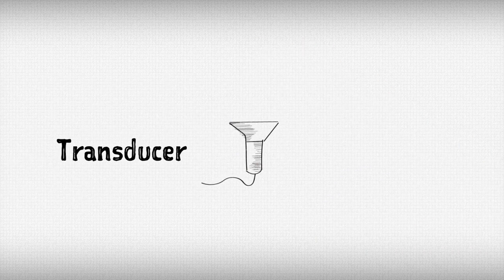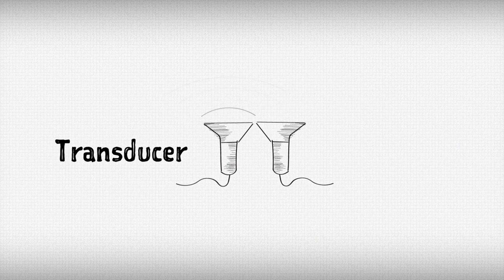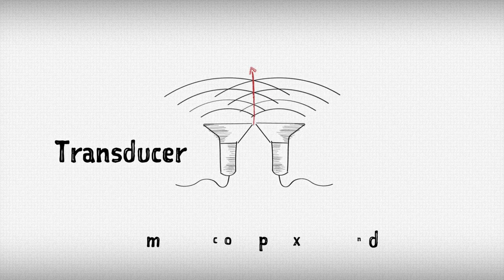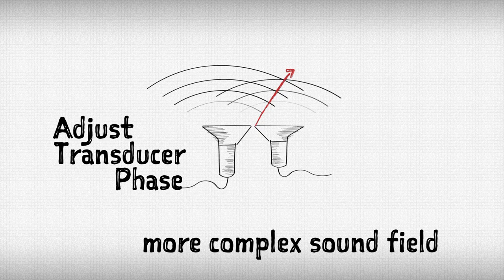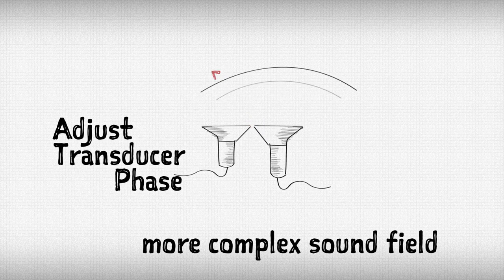Ultrasound waves are generated by a transducer. The waves can interfere, so two transducers can generate a more complex sound wave. Adjusting the phase of one transducer relative to the other changes where they interfere.